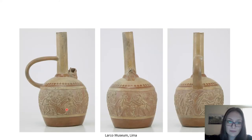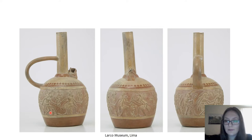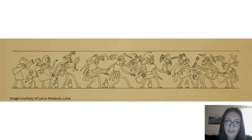Here too — can you see it? The pan pipers floating over the warrior, like receiving the warrior in the underworld, in the world of the dead. Here we have the rollout so you can see it better: the two pan pipers playing over the warrior, and the small drum player.